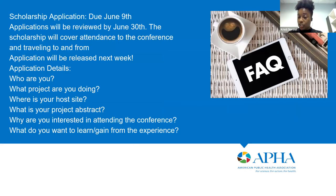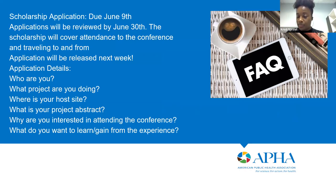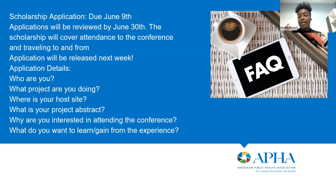There were a lot of questions around the annual meeting — what the process looks like and how to complete the scholarship application. Thank you all for the questions; keep them coming. We will have a due date of June 9th for the scholarships, and we will be reviewing them within that month by a board chosen through APHA. That board will review the applications and award applicants toward the end of June. The scholarship will cover conference attendance and travel to and from the conference.